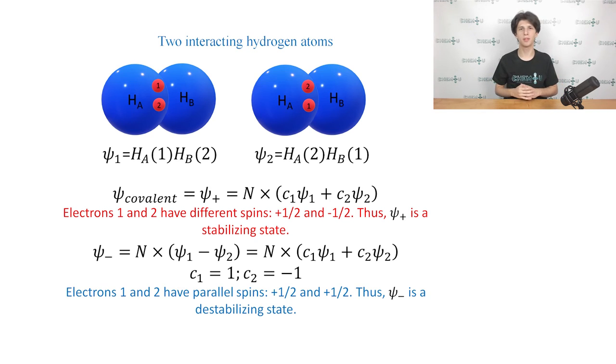Let's examine the spins of both electrons in ψ+ and ψ-. In the case of ψ+, electrons 1 and 2 have different spins, namely, plus 1/2 and minus 1/2. In contrast, the spins in ψ- are parallel. Let's say both of them are plus 1/2. From inorganic chemistry, we know that the opposite spins stabilize the system upon a pairing, while parallel spins tend to repel each other. In other words, the closer the parallel spins are, the higher is the energy of the system. This means that the ψ+ wave function represents the stabilizing interaction, while the ψ- is associated with the destabilizing interaction.